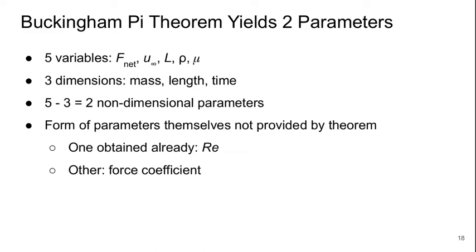And we have three dimensions: mass, length and time. I can just look at velocity and density, and between those two quantities, I cover those three types of units. No other types of units are introduced. Force, of course, can be expressed in terms of mass, length and time. So therefore, we have five minus three equals two non-dimensional parameters. Now, the theorem doesn't tell us anything about what the form of those parameters should be. One we've now got: Reynolds number. The other is what we call a force coefficient.